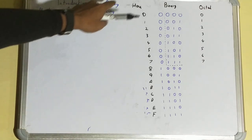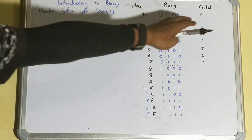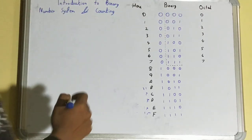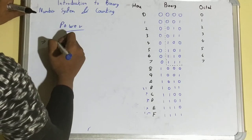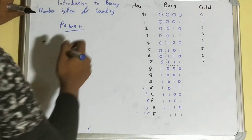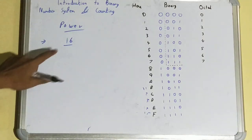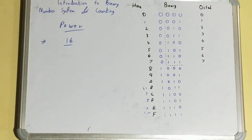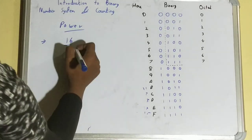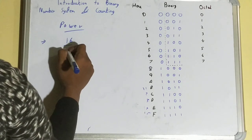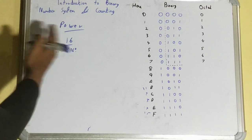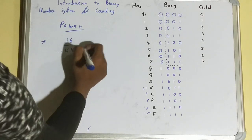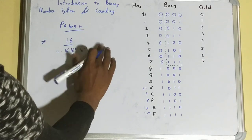Now for the power method — converting hexadecimal, binary, or octal back to decimal. For example, take the hexadecimal number 16₁₆. Assign powers of 16 from right to left starting at 0: the digit 6 is at position 0 (16⁰), and digit 1 is at position 1 (16¹). For numbers to the right of a decimal point, you would use negative powers like 16⁻¹, 16⁻², and so on.